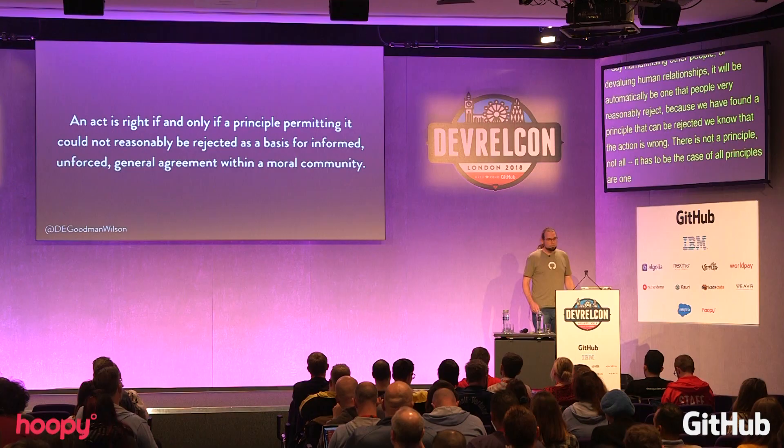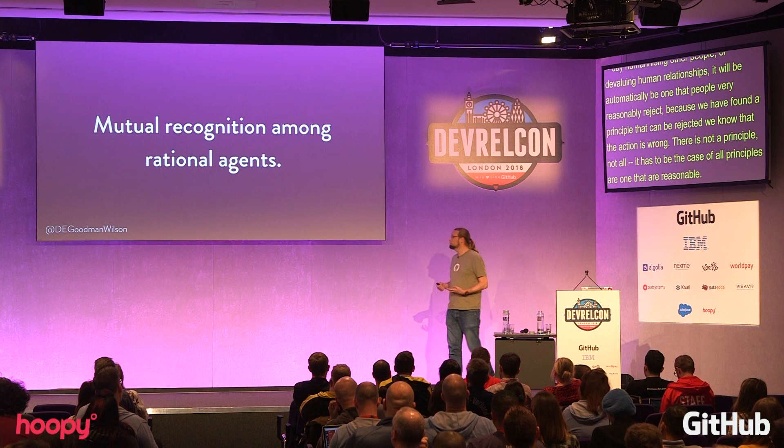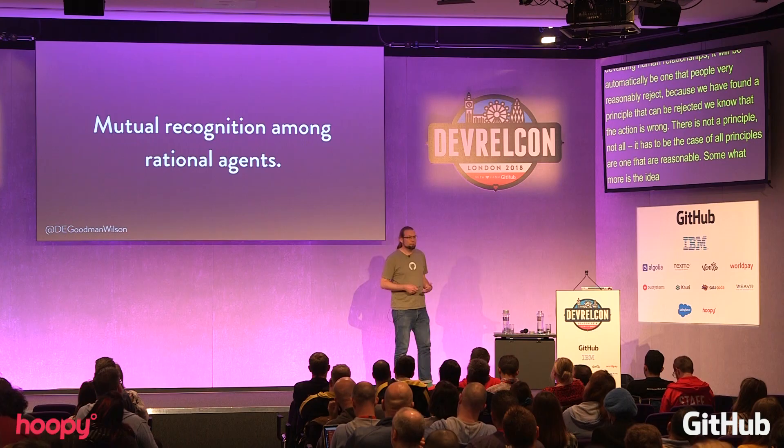Any kind of action that ends up having a justification in terms of dehumanizing other people or devaluing human relationships is going to be one that people will very reasonably reject. And because we found a justifying principle that can be rejected, we know this action is wrong. Distilled somewhat more, there's this mutual recognition among rational agents. We can use this as a shortcut: are we failing to recognize the other stakeholders here as people, as part of the community? If so, we can essentially evaluate the action as wrong.